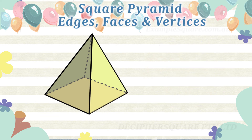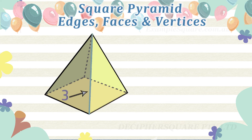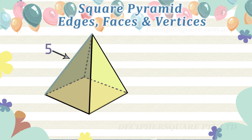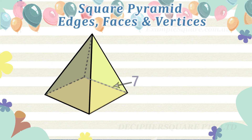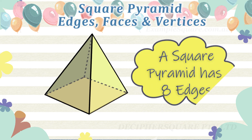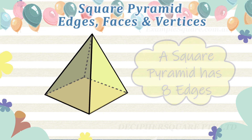How many edges does a square pyramid have? One, two, three, four, five, six, seven, and eight. A square pyramid has eight edges.